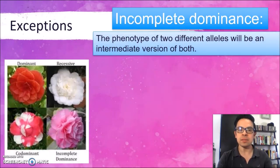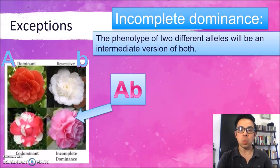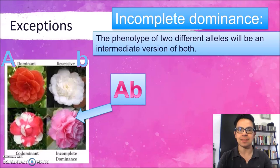The last exception is if the condition is said to be incomplete dominance. In this case, we are going to have an intermediate version of the genes. We have a dominant gene for red color and a recessive gene for white color, and in the heterozygous offspring we're going to have the intermediate version of both phenotypes, which in this case will be pink flowers. I hope you have enjoyed this video and that it is useful to clarify these concepts. We are going to use them later when we solve genetic problems in single trait crosses. Remember to maintain your scientific thinking and to love biology. See you later, bye!